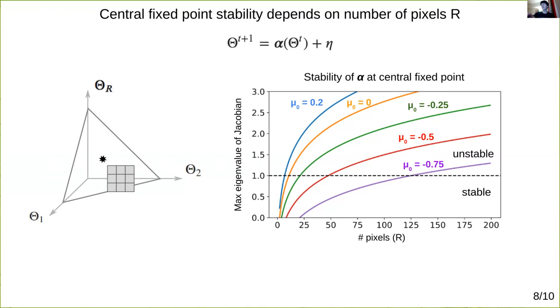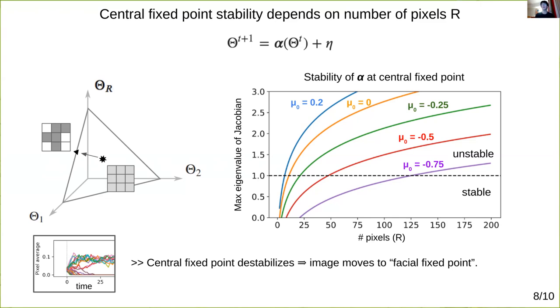Thus, when there are enough pixels in the whole network, we no longer expect to see the macroscopic activity converge to a uniform image. Instead, the activity migrates to an image with only a subset of pixels active corresponding to the separating dynamics we saw in the original network, which I will call a facial fixed point.